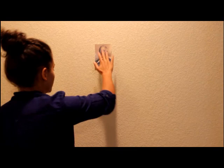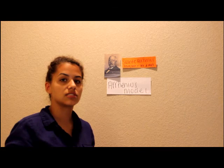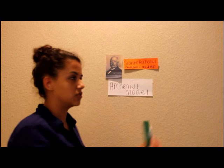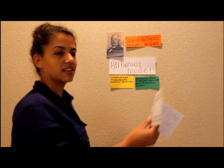Svante Arrhenius, a Swedish scientist, was born February 19, 1857. In 1887 he introduced the Arrhenius Model. The Arrhenius Model said that bases were substances that produced hydroxide ions in aqueous solutions, and that acids were substances that produced aqueous solutions. For example, sodium hydroxide is made up of one sodium ion and one hydroxide ion, and breaks apart when dissolved in H2O to make sodium ions and hydroxide ions.